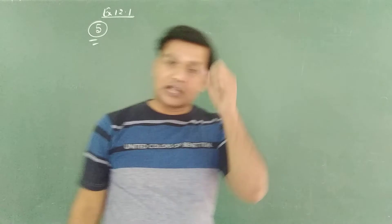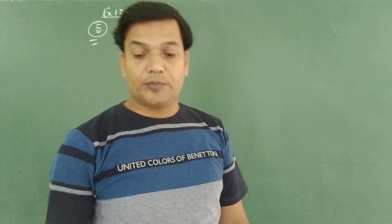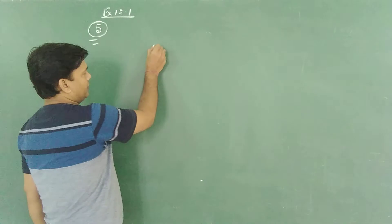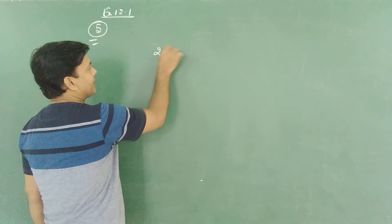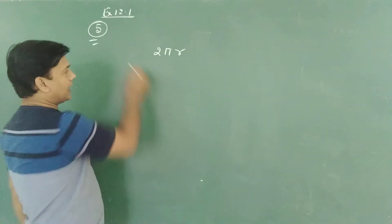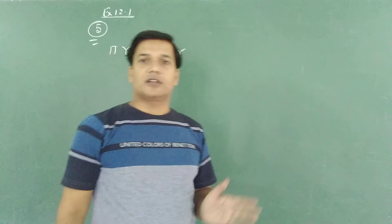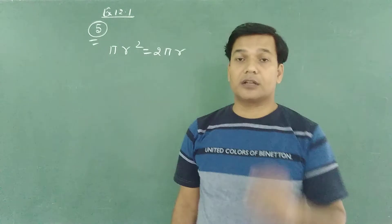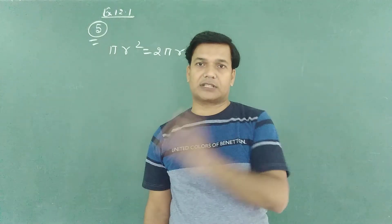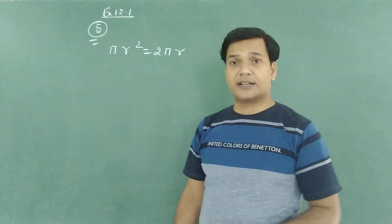Very short answer question. In this, we have that the perimeter and the area of the circle are numerically equal. The circumference is given by 2πr and the area is given by πr². So πr² equals 2πr — numerically they are equal, the circumference and the area.